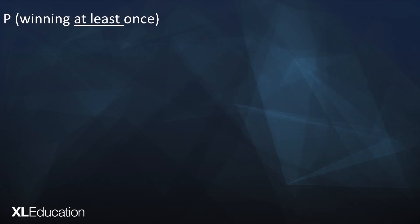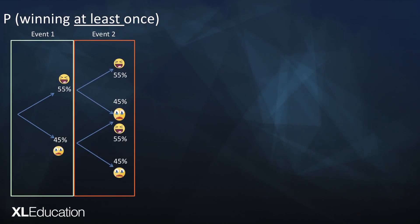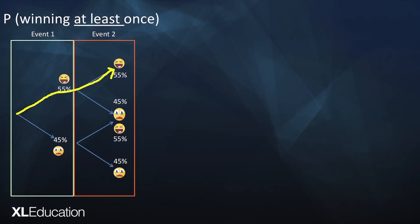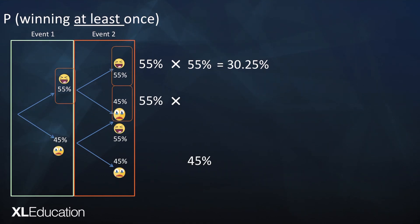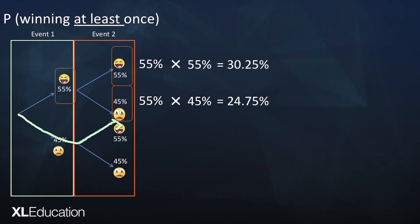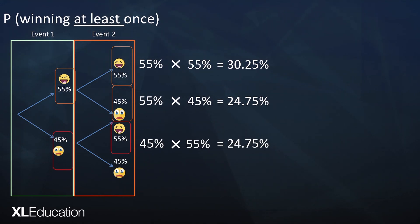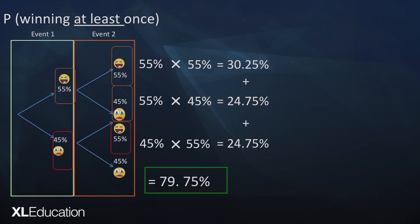What are Amatle's chances of winning at least once? We examine all paths that fulfill the requirement. The first path — winning both matches — gives 30.25 percent. The second path — winning the first and losing the second — gives 24.75 percent. The third path — losing the first and winning the second — gives 24.75 percent. Adding those probabilities gives us 79.75 percent, which is her chance of winning at least once. Pretty good odds.